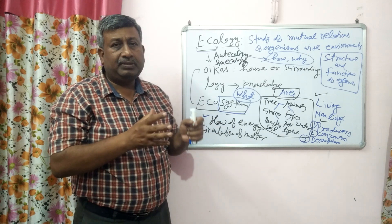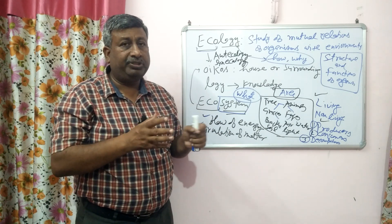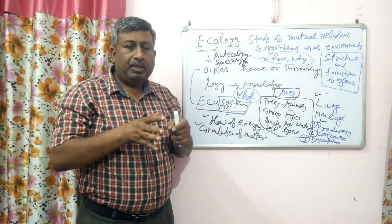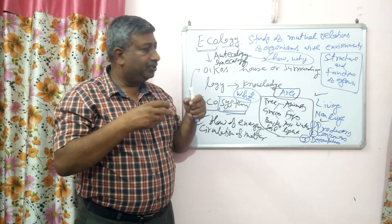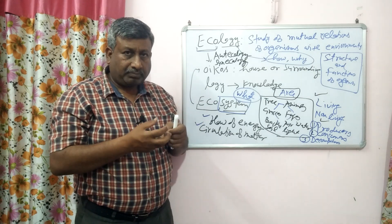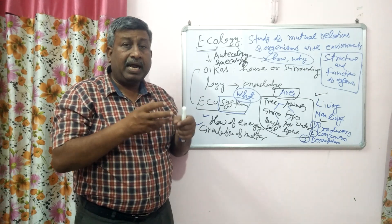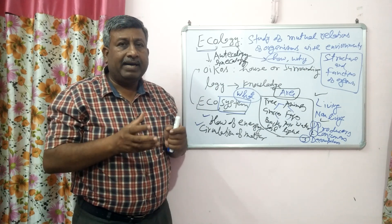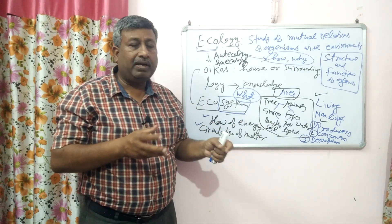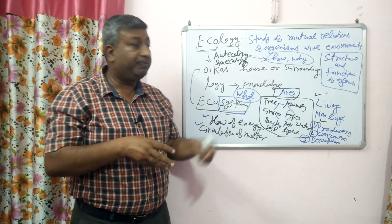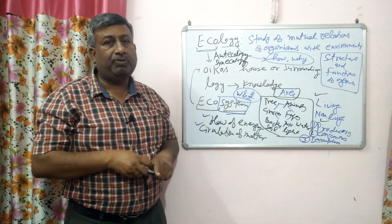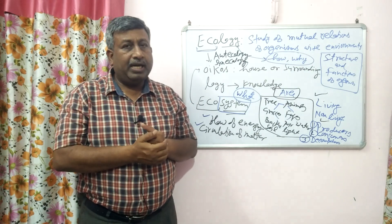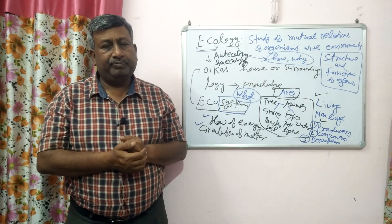So this is the difference between ecosystem and ecology. Ecology is the study about the interaction, about the relation of organisms with each other and with the environment. And ecosystem is the area where living and non-living are present and interact with each other for the flow of energy and circulation of matter. So this is the concept of ecology and ecosystem. Thank you.